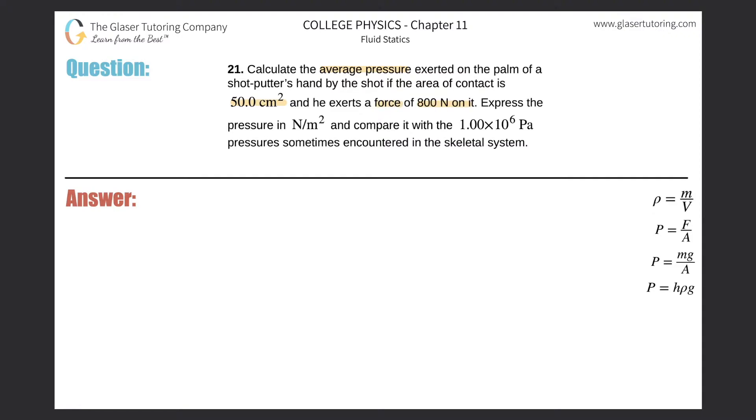All right, so this one's fairly straightforward. They give us an area, they give us a force, and what we are asked to do is find pressure. So you're thinking about an equation that relates those three variables together, and we do. We have this equation right here that the pressure on an object is equal to the force applied divided by the area over which that force is applied.